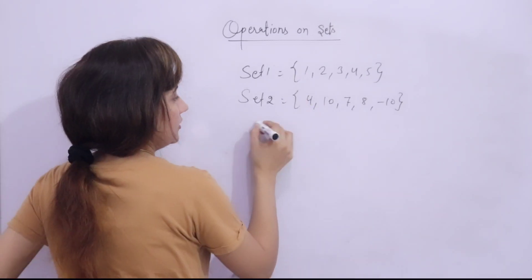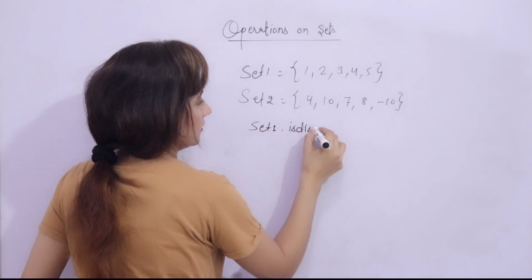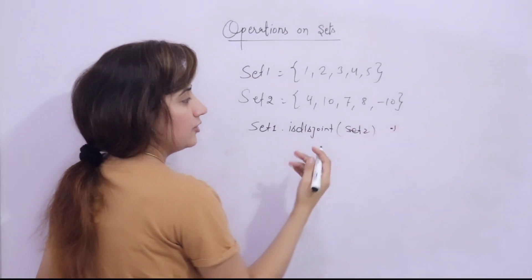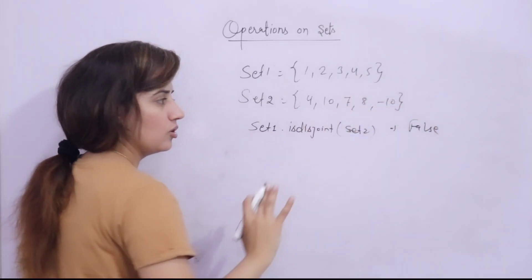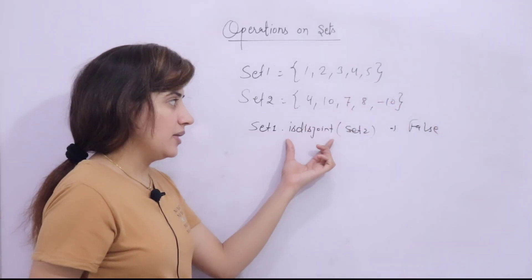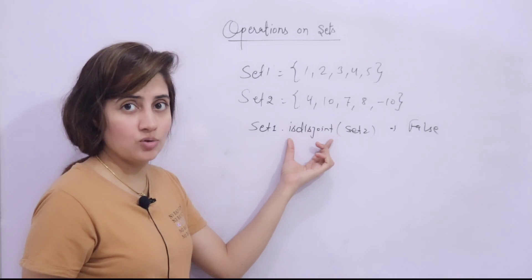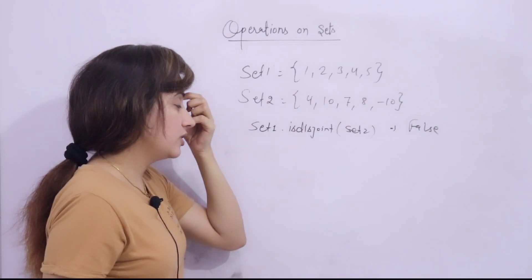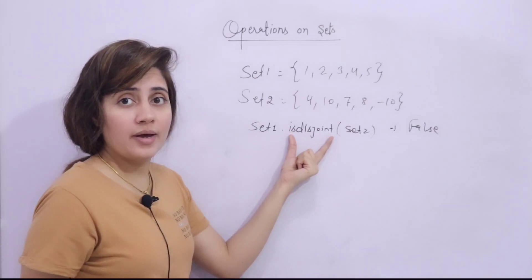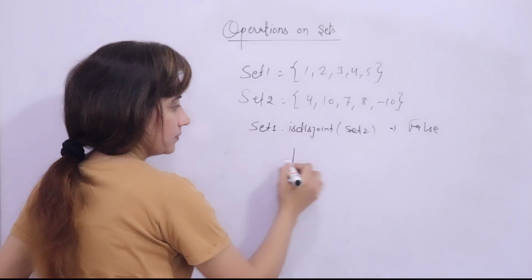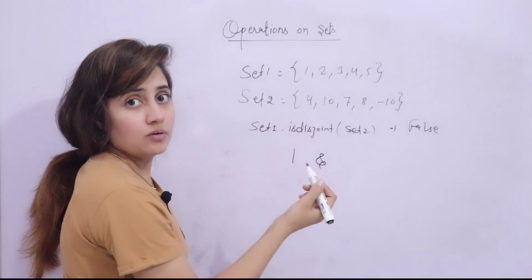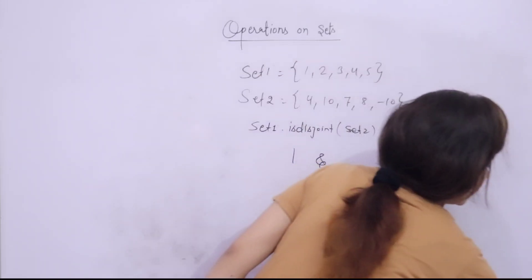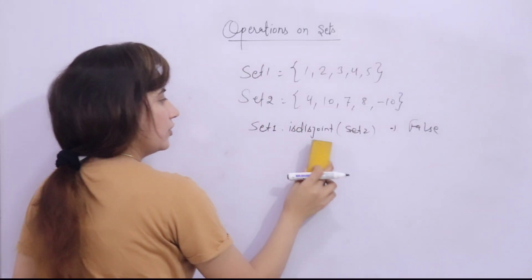To check if two sets are disjoint we have the method isdisjoint(). You call set one dot isdisjoint() and pass set two as an argument. This returns true or false. In this case it will return false because the two sets are not disjoint. You can also pass a list or tuple as the argument. Note that for isdisjoint there is no operator — unlike union which has |, intersection which has &, difference which has -, and symmetric difference which has ^.